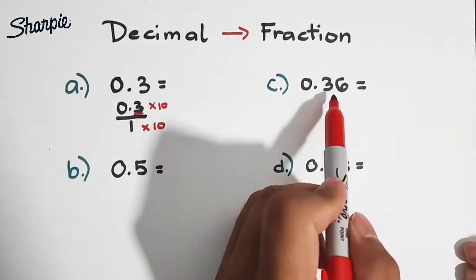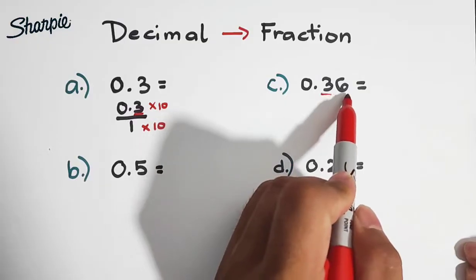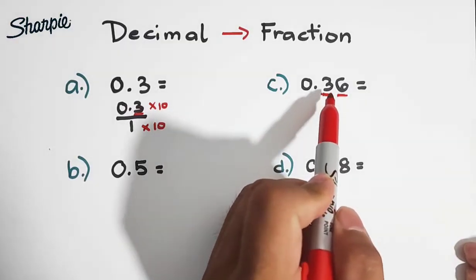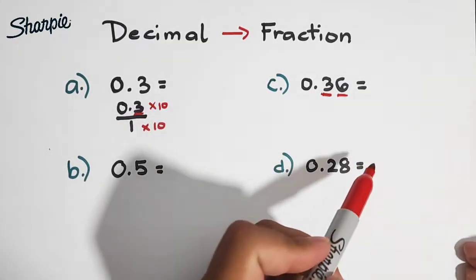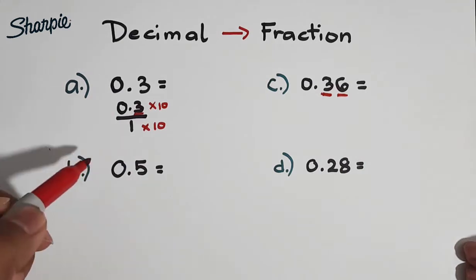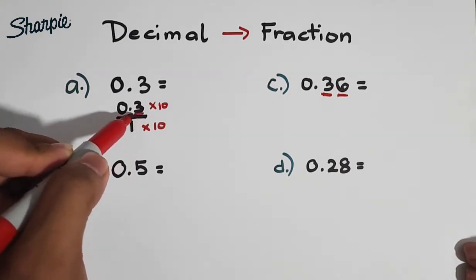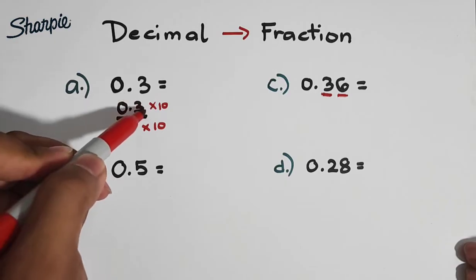Pero kapag dalawa naman, like this one, 0.36, we have 1 and 2, you will multiply by 100. And since yung ating ditong decimal is 1 lang, or 1 decimal place lang meron tayo, we will multiply it by 10.